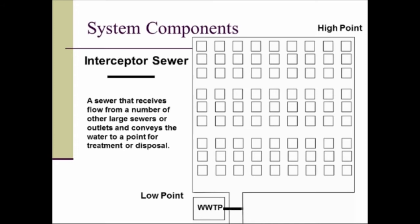Those dark lines heading from the town to the wastewater treatment plant would be our interceptor sewer. That's a sewer that receives flow from a number of other large sewers or outlets and conveys that water to the wastewater treatment plant for final disposal. Interceptor sewers are the large piped portions of the system.